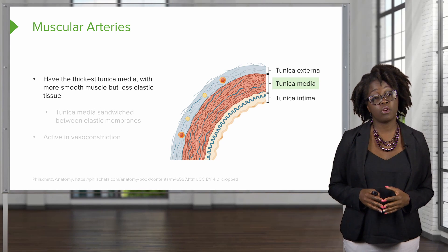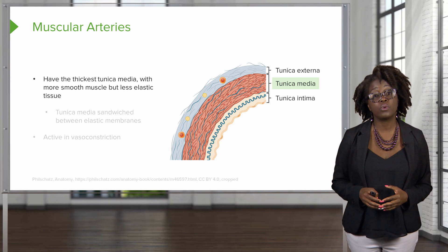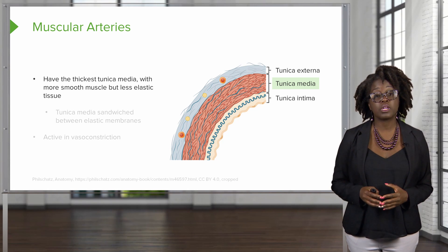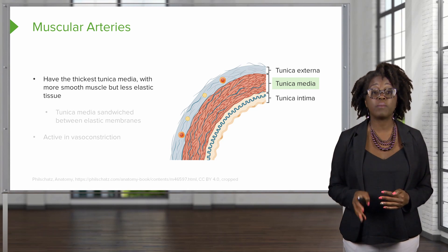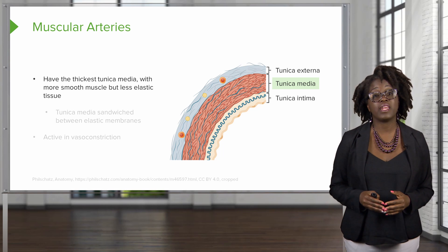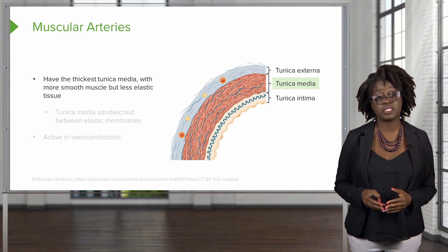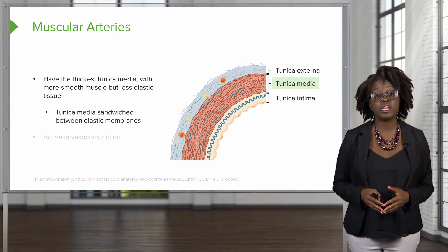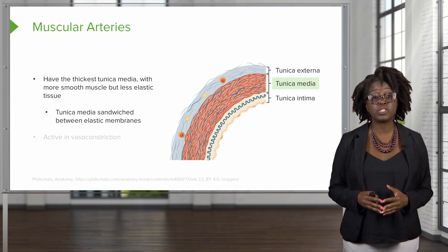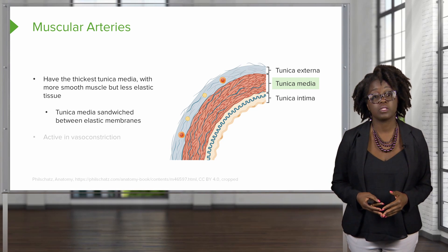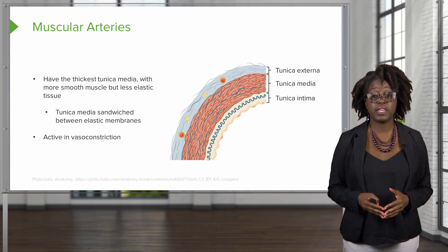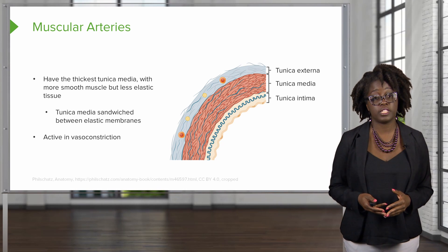Muscular arteries have the thickest tunica media, but this tunica media is going to have more smooth muscle than it does elastic tissue. The tunica media is usually sandwiched between an elastic membrane, and it is very active in vasoconstriction.